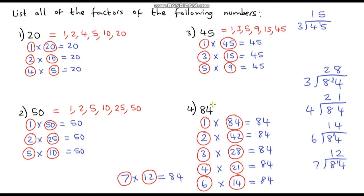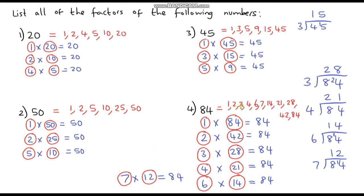Now 8 does not go into 84, nor does 9, 10, or 11. And now we're back at 12, so we have finished. We've got quite a lot of factors of 84. The factors are: 1, 2, 3, 4, 6, 7, 14, 21, 28, 42, and 84.